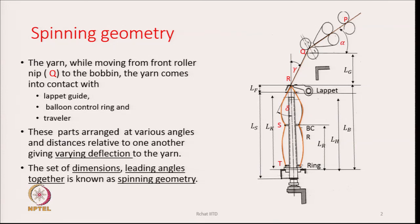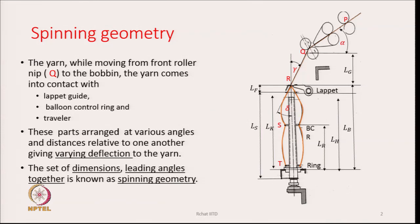The yarn comes into contact with the lappet guide at point R, with the balloon control ring at point S, and with the traveler at point T. All these parts are arranged at various angles and distances relative to one another, giving bearing deflection to the yarn. The set of dimensions and leading angles together is known as spinning geometry — the geometrical path the yarn follows because of the locations of the lappet guide, front roller nip, balloon control ring, and ring-and-traveler combination.